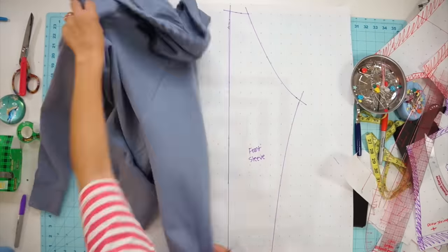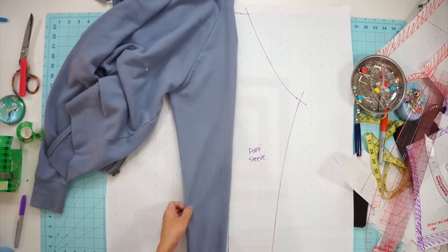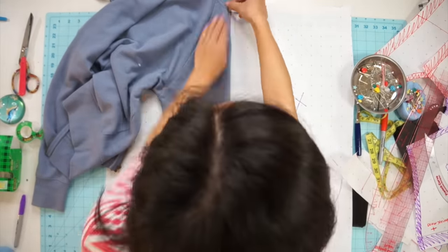Next, flip the sleeve over to the back side, line up the top neckline markings and then trace out the back side of the sleeve.